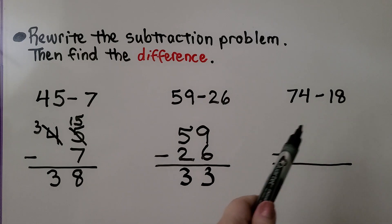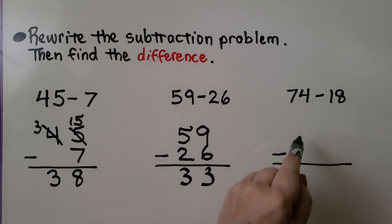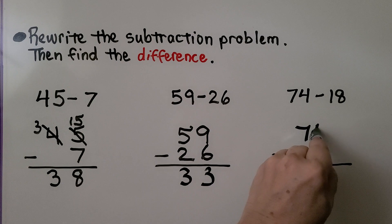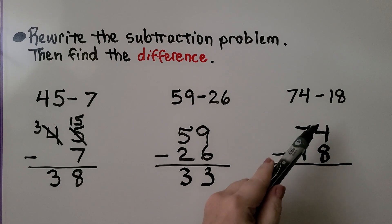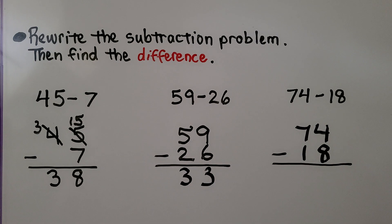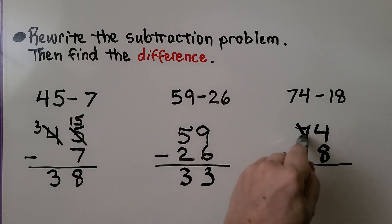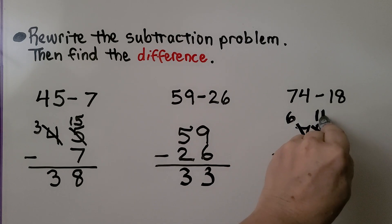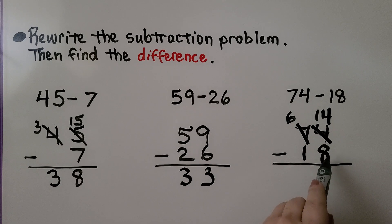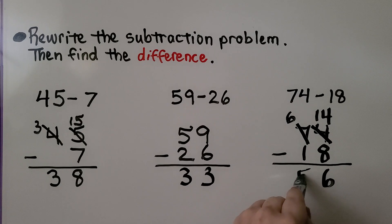Here we have 74 minus 18. They both have tens and ones, so we write 74 and 18. Look at the ones — we have four ones and need to take eight away. We don't have enough, so we need to regroup. The seven becomes six tens and the four becomes fourteen ones. Fourteen minus eight is six, and six tens minus one ten is five tens. It's equal to fifty-six.